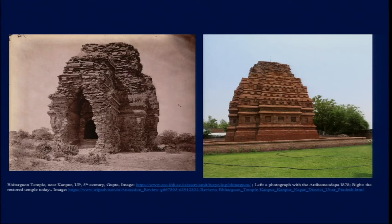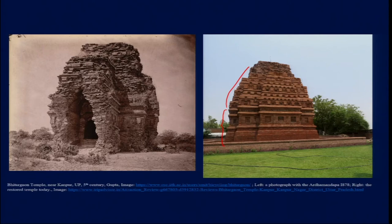The Garvagriha of the Bhitargav temple follows the Vastupurusha Mandala ground plan with a square base, and on top of that we have the superstructure. Over time, as the terminologies, ideas, and material elements used in temple architecture got more and more complex, the superstructure came to go much beyond the base.